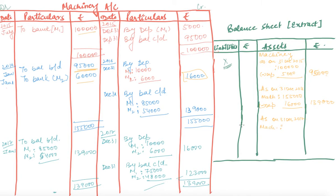Similarly, as on 31st December 2017: Machinery balance is ₹1,39,000, minus depreciation of ₹16,000, leaving a net balance of ₹1,23,000.